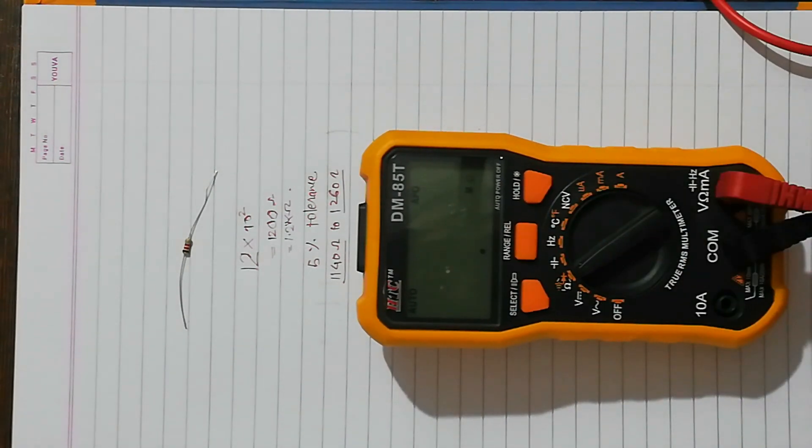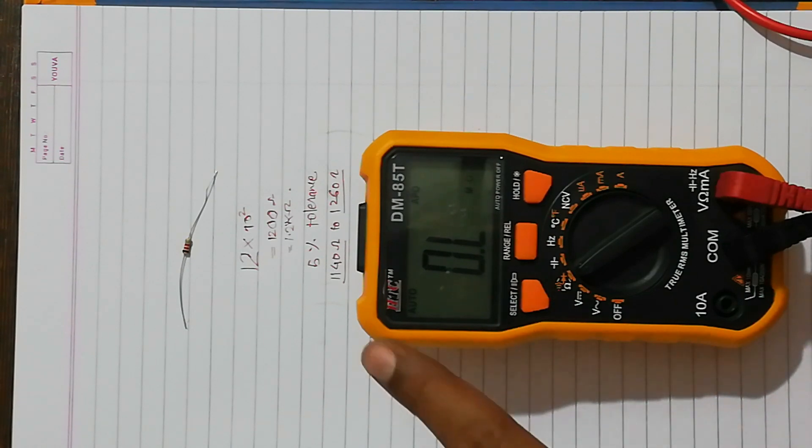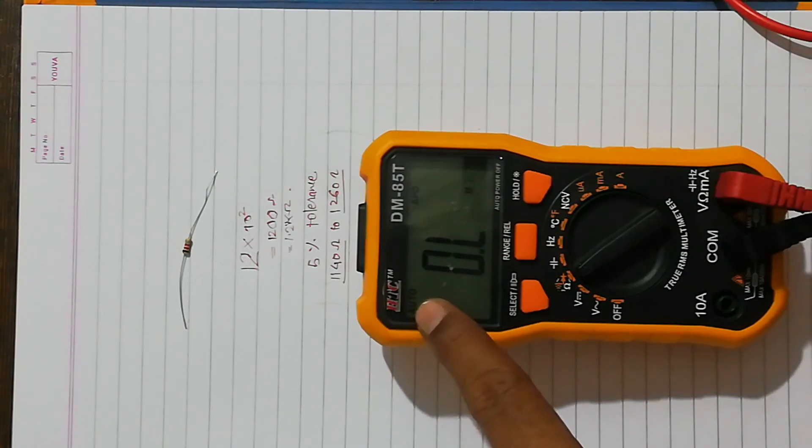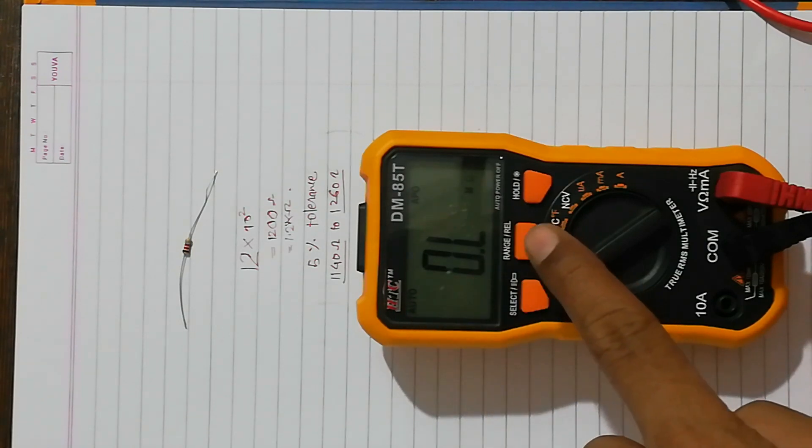And now it is set to the automatic mode. So I haven't selected the resistance range. It means I have an option to select the resistance range if I already know in what range the resistor to be measured can fall in, if it is ohms, kilo-ohms, mega-ohms, giga-ohms, etc.